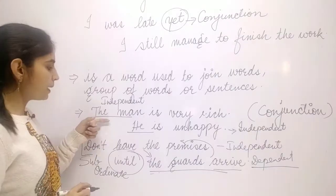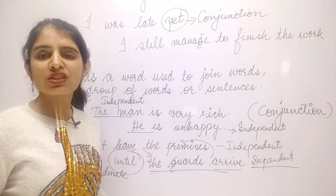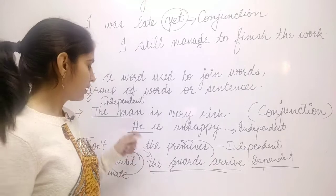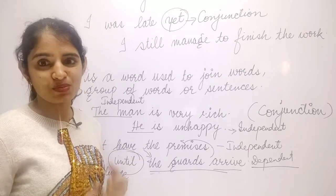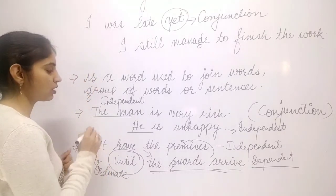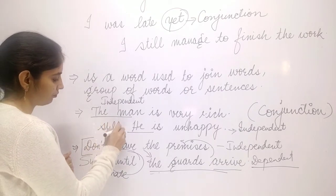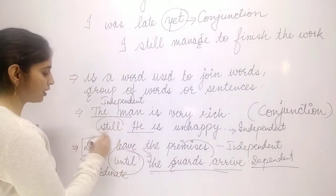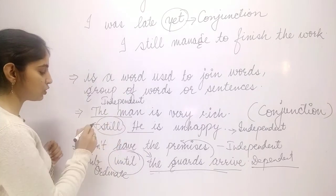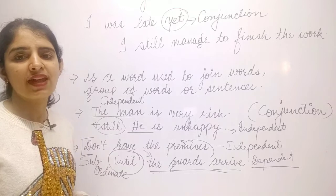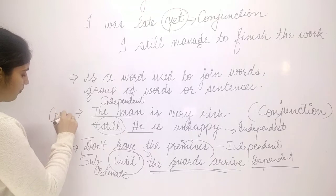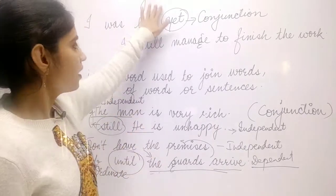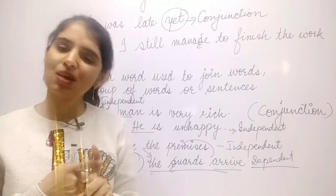We have two sentences: 'The man is very rich' and 'He is unhappy.' We can join them. Since they contrast — rich but unhappy — we use the word 'but': 'The man is very rich but he is unhappy.' Both sentences were independent, and the conjunction used to join two independent sentences is known as a coordinating conjunction.